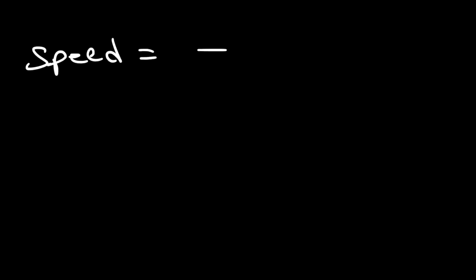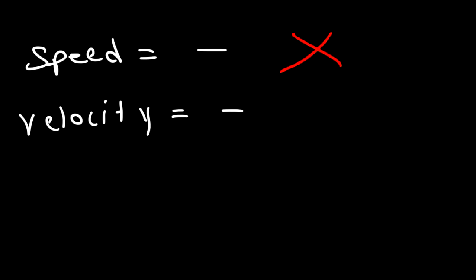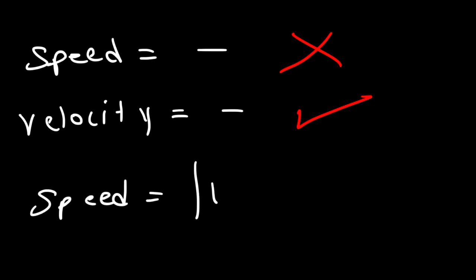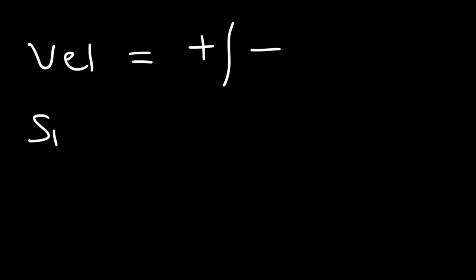Can speed be negative? And what about velocity — can velocity be a negative value? Speed can only be positive. Velocity can be positive or negative. You need to know that speed is the absolute value of velocity. So velocity can be positive or negative, but speed is always positive.